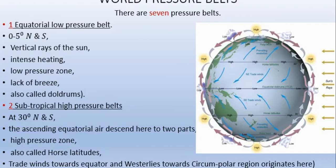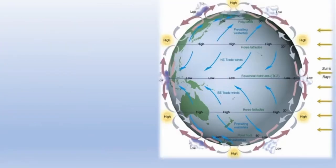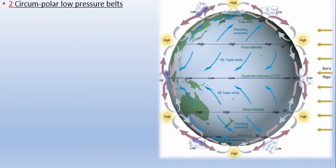In this region you can see the easterlies — also called trade winds. The next belt is the subpolar low pressure belt, belonging to about 55 degrees north and south latitude, reaching a maximum of 55 degrees in both the northern and southern hemispheres.